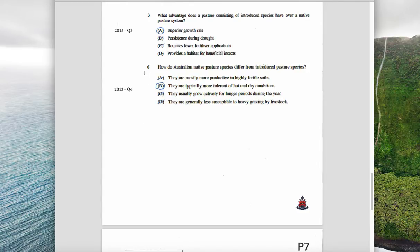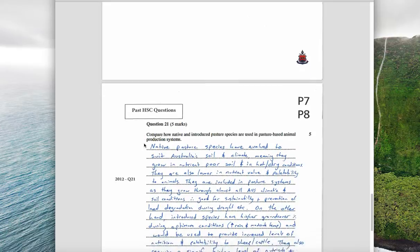How do Australian native pasture species differ from introduced? They are more productive - that's not true. They usually grow actively longer periods - not necessarily true. They're generally less susceptible to heavy grazing - not necessarily true. But they are typically more tolerant of heat and dry conditions.